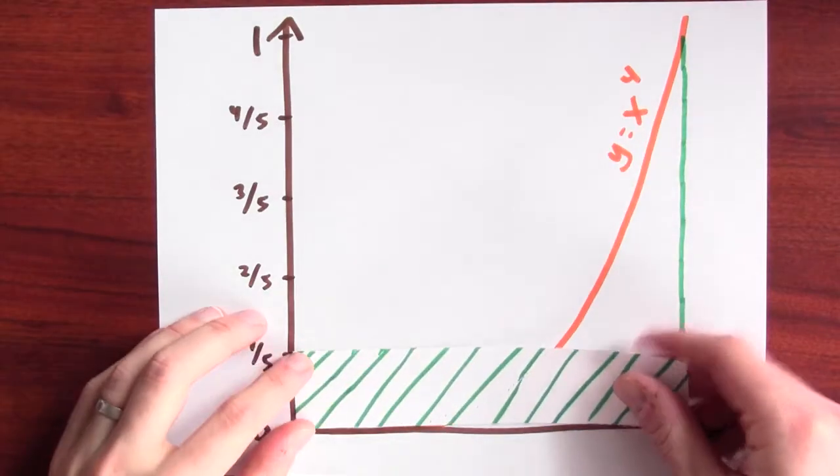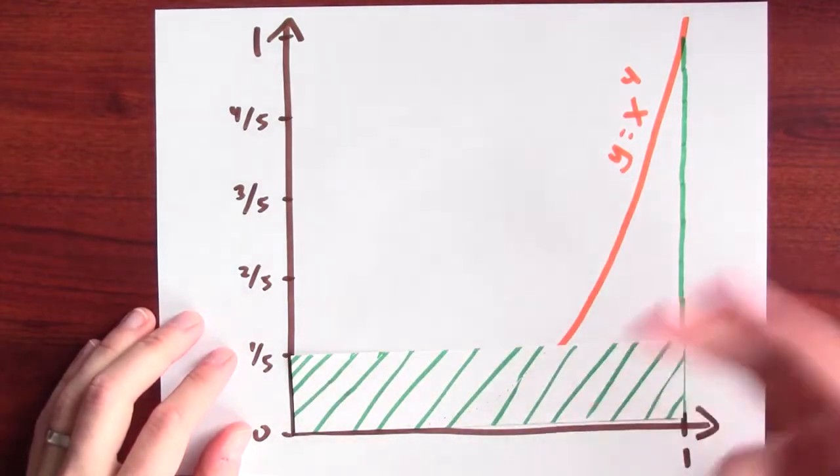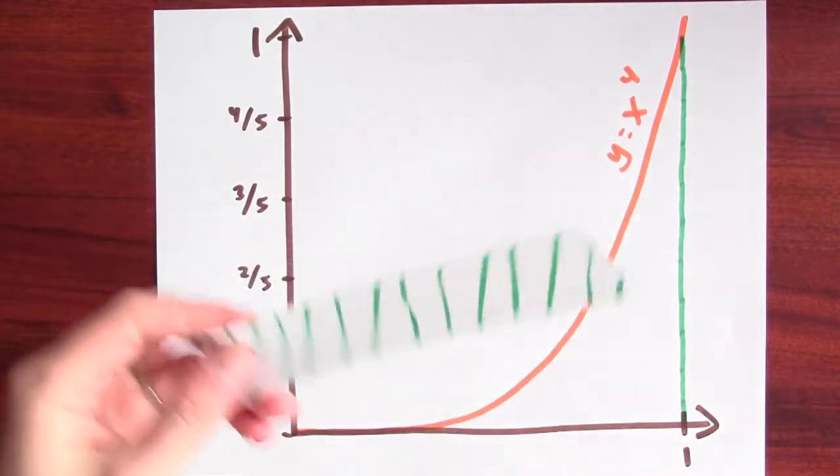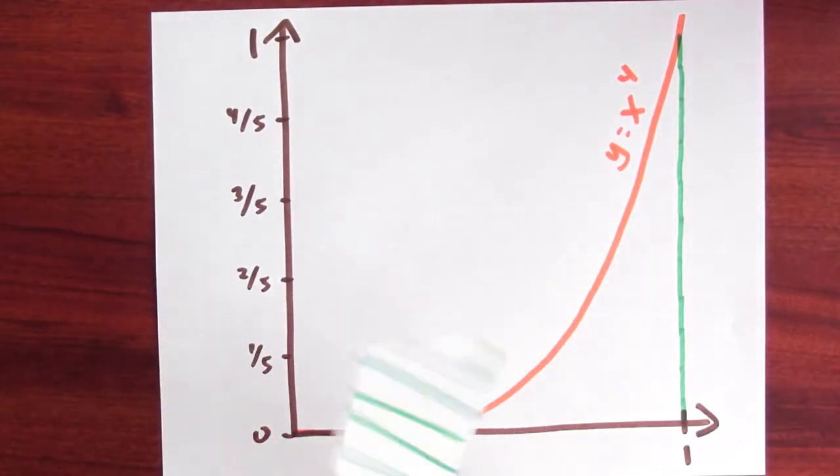Let me get out my scissors. Well, here's a rectangle, and the width of this rectangle is 1, and the height of this rectangle is 1 5th. So, this rectangle contains 1 5th of a square unit of area, and that's the same as the area under this graph. So, let me cut this rectangle a bit.